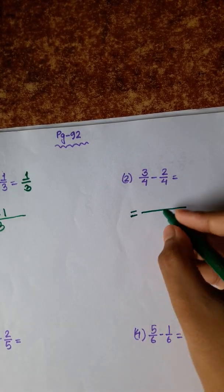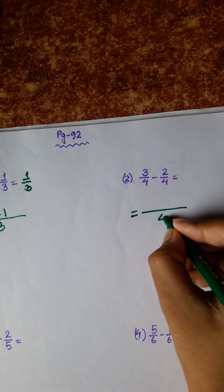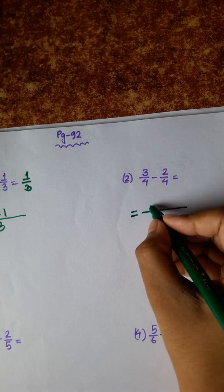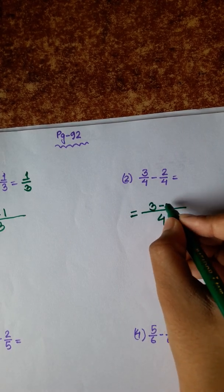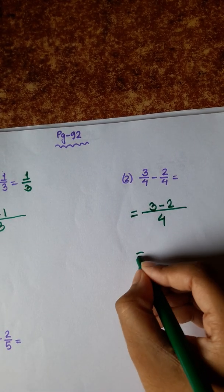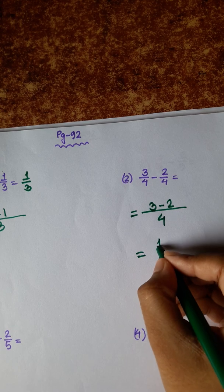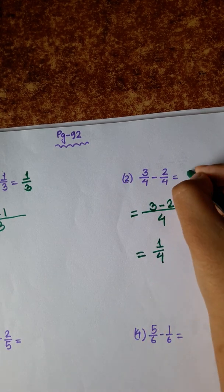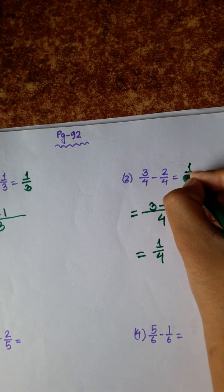Denominator 4. We write 4. 3 minus 2 equals 1. So the answer is 1 by 4.